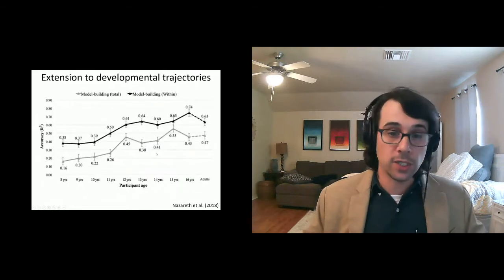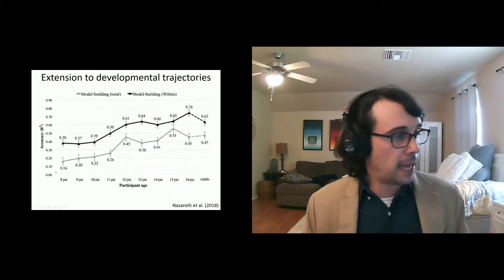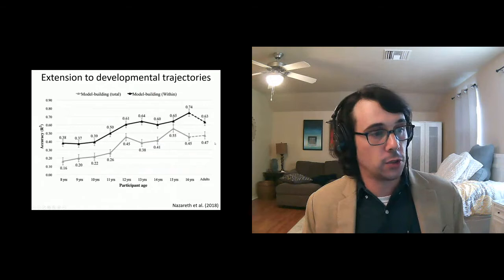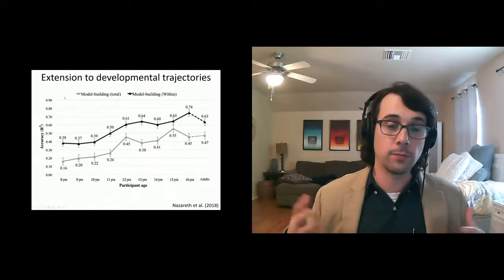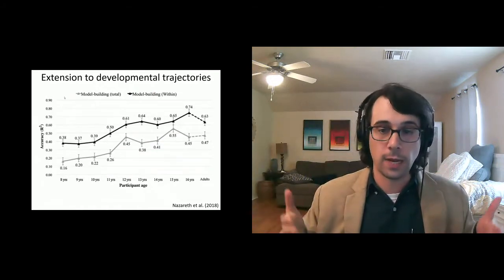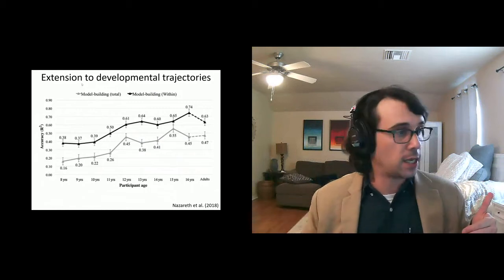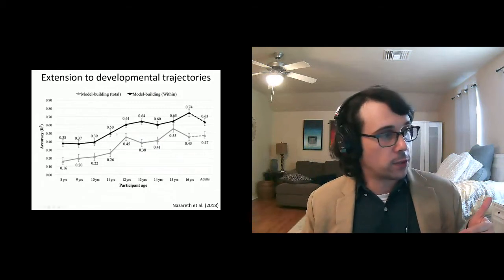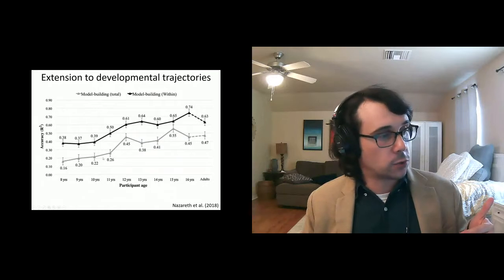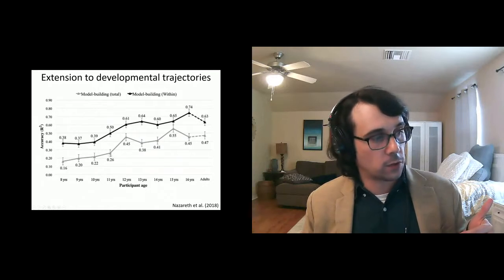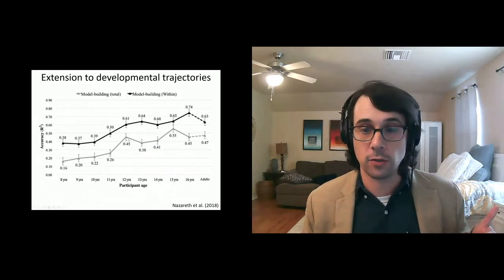In a second study, we looked at the developmental trajectory using the exact same paradigm in eight-year-olds as we did in adults and showed that the trajectories of how performance improved for within-route and between-route accuracy actually varied with within-route pointing increasing linearly to adulthood, whereas between-route or integrating sort of goes through this qualitative leap around 12 years of age.